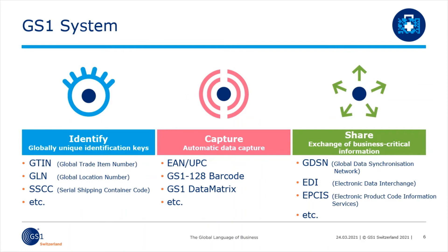Let's take a look at the GS1 system. The GS1 system is based on three parts: the identification standards, the data carrier standards, and the data exchange standards. The first part contains the identification standards — Identify. This enables products, locations, delivery parts, or other objects to be identified. You can also use it to uniquely identify services or even people worldwide.